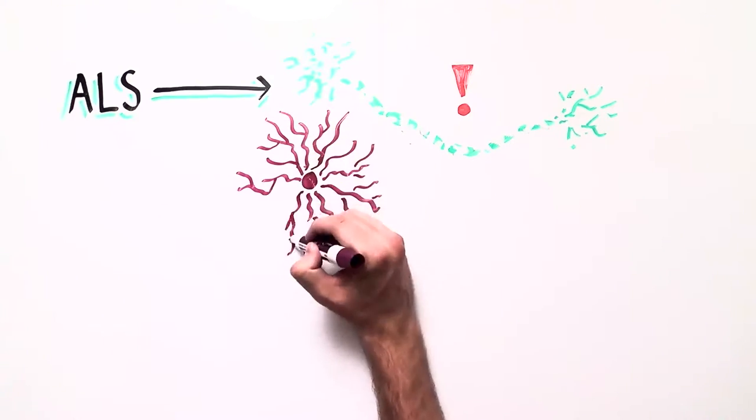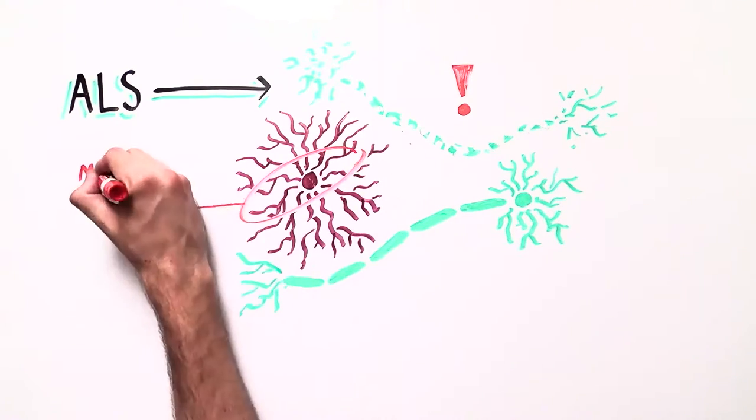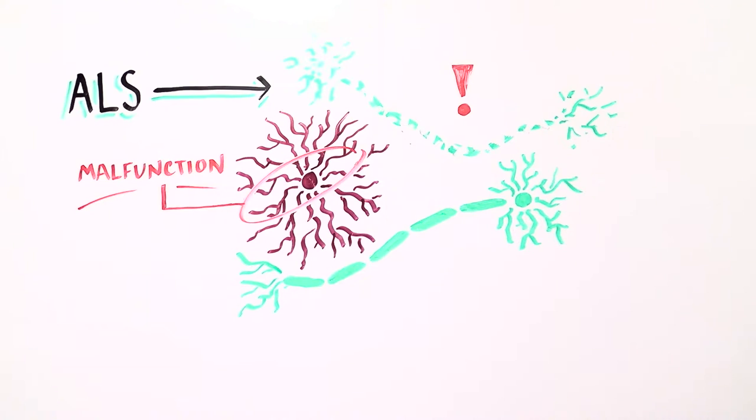After many years of research, scientists have discovered that degeneration of motor neurons in ALS may be caused by a malfunction in surrounding cells called astrocytes.